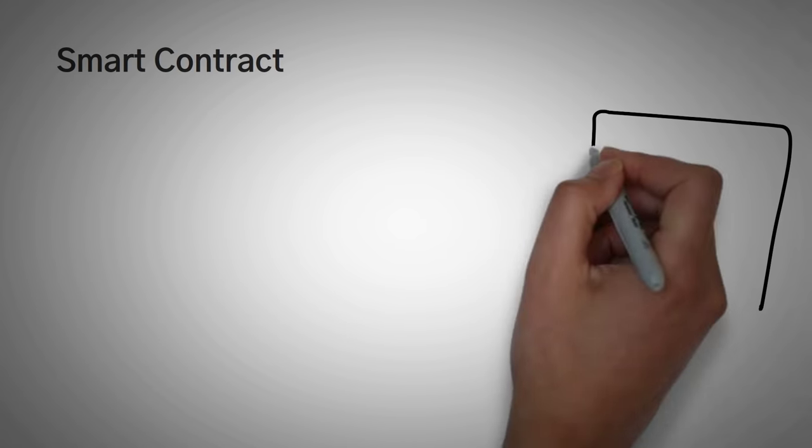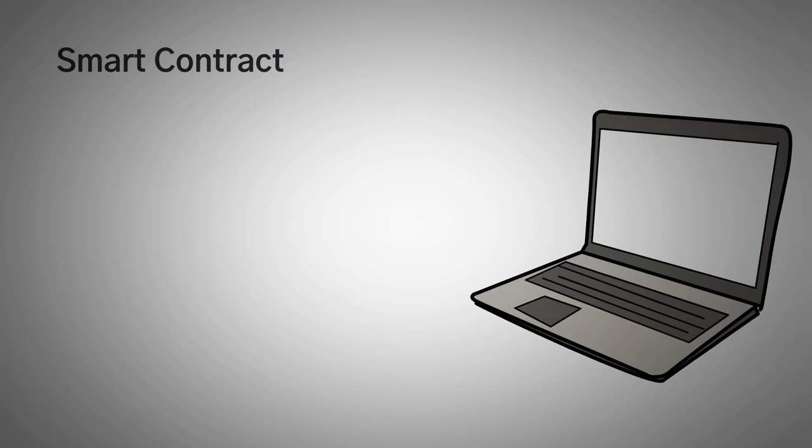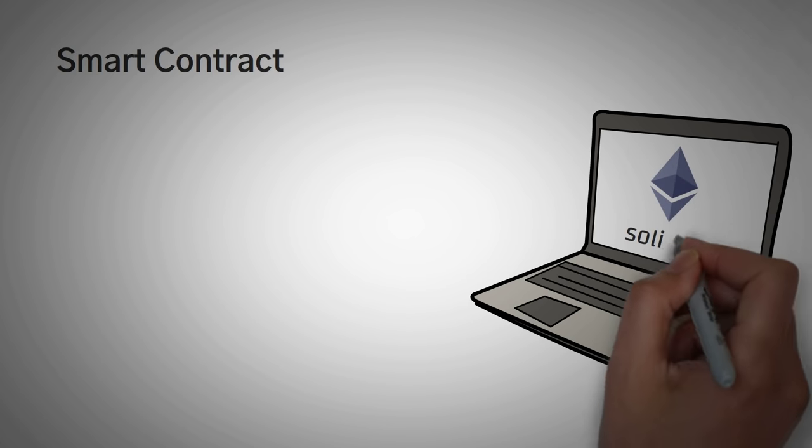A smart contract is exactly like this. It's a piece of code that does something if something else happens. A lot of people call it, if this, then that. The most common smart contracts are written on the Ethereum network using something called solidity.